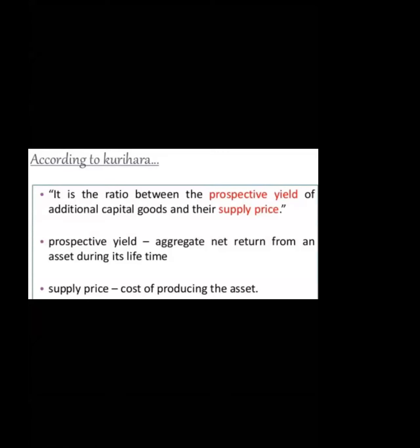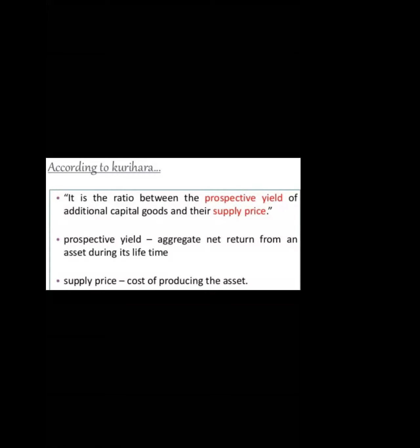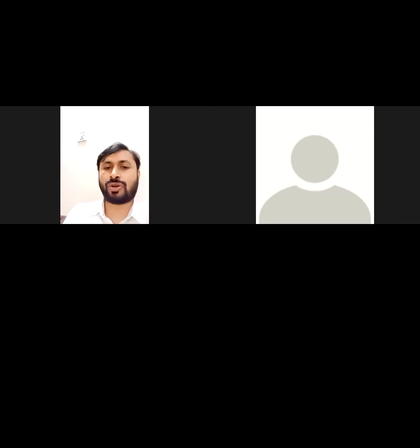According to Keynes, MEC is the ratio between the prospective yield of additional capital goods and their supply price. The prospective yield is the aggregate net return expected from the asset during its lifetime. The supply price is the cost of producing the asset or machine. The ratio of prospective yield to supply price is what we call the marginal efficiency of capital.